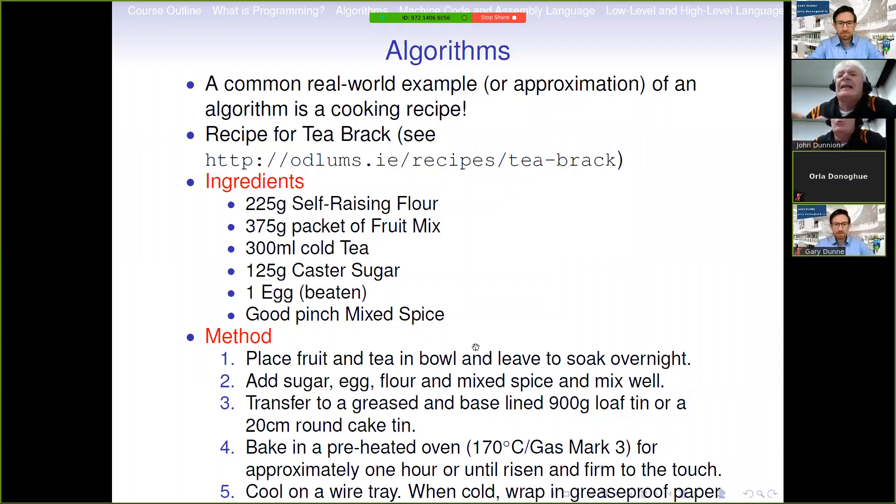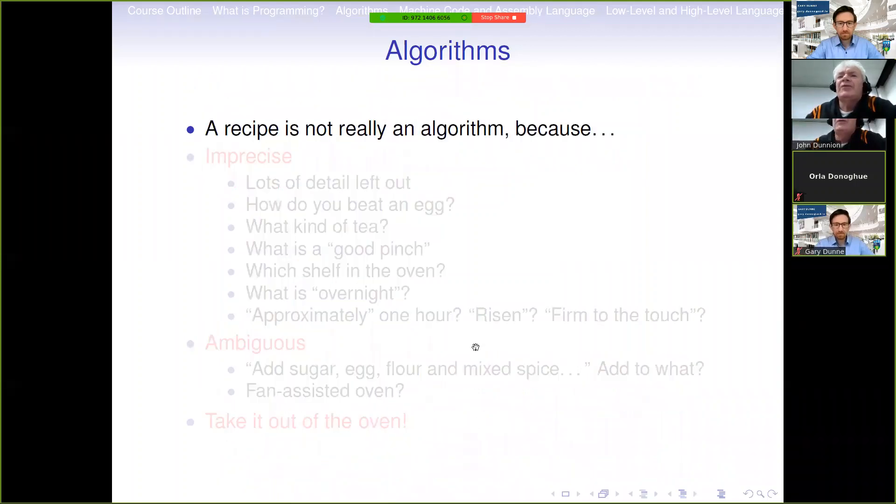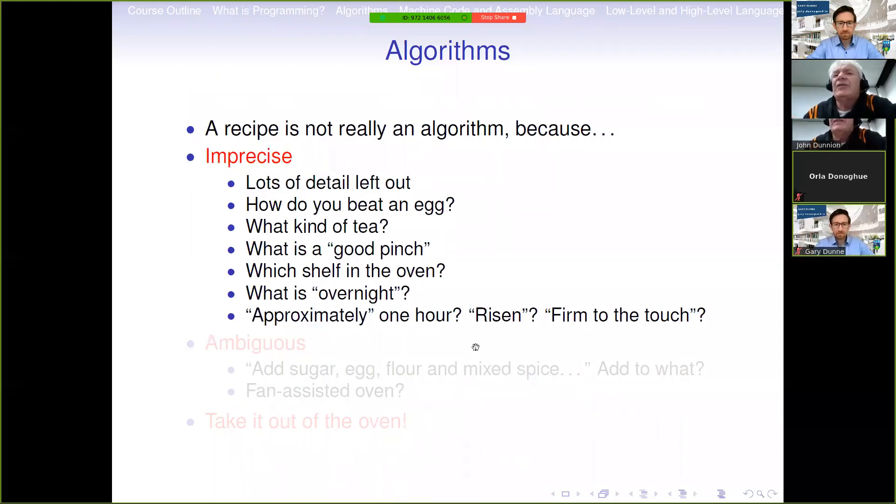So this is a reasonable analog of an algorithm. But however, there are a few problems because it's not really an algorithm. It's a bit imprecise. There's lots of detail left out. For example, if you were to give this to a computer or a robot to do, how do you beat an egg? It doesn't say how to beat an egg. Also, what kind of tea do you use? Anybody who makes tea brack knows that you have to use Barry's or Lyon's or something like that. You don't use chamomile. That's not going to give you the same flavor on your tea brack. What's a good pinch? Most bakers and cooks will know what a good pinch is. It's certainly not a fistful. Which shelf in the oven? Because bakers and cooks will know that the shelf that you put your stuff on in the oven is going to make a difference to the heat. What is overnight?